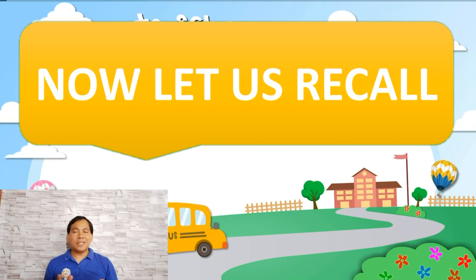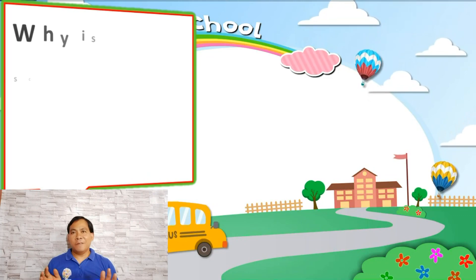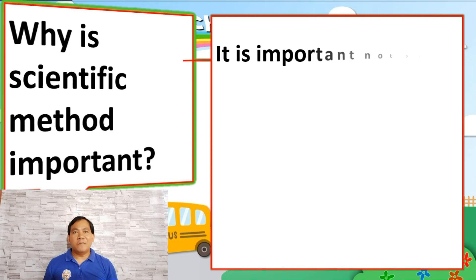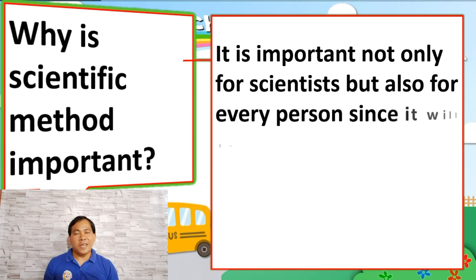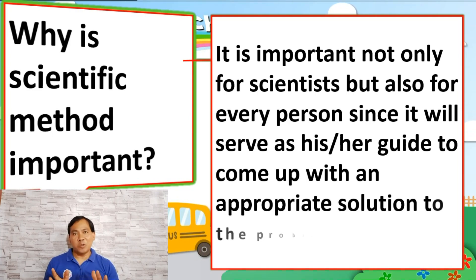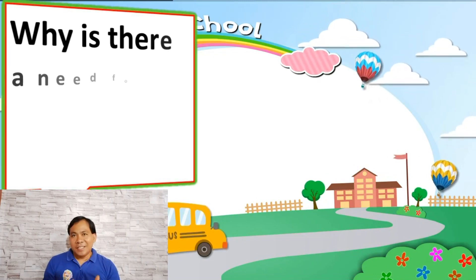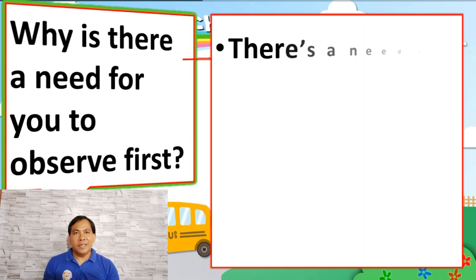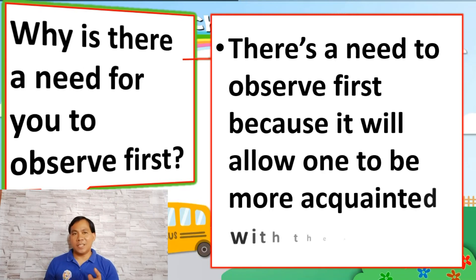Now, let us recall. Why is scientific method important? It is important not only for scientists but also for every person, since it will serve as a guide to come up with an appropriate solution to the problem. Why is there a need to observe first? There is a need to observe first because it will allow one to be more acquainted with the situation.